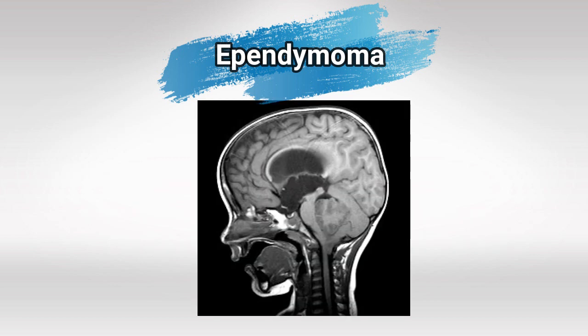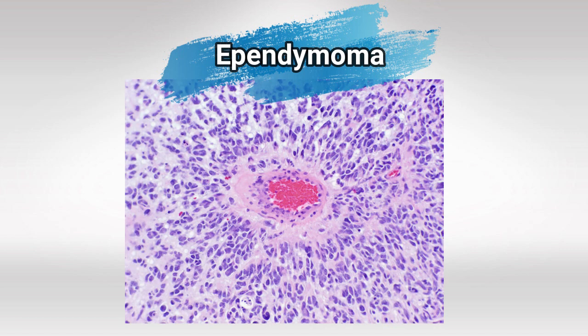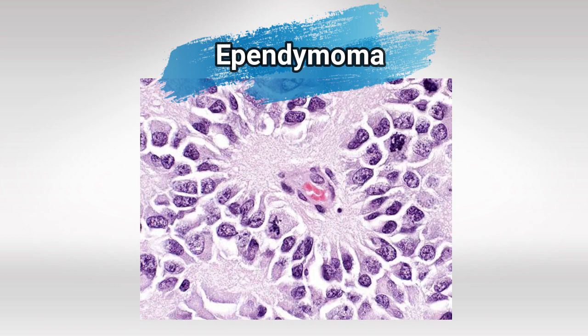Here you can see the ependymoma arising from the fourth ventricle and compressing it. Here is the perivascular rosette — as you can see there's a blood vessel in the middle and a rose-like shape arising around it. And here are the basal ciliary bodies.